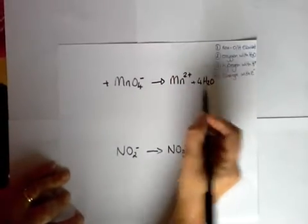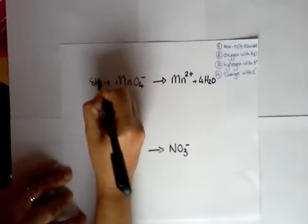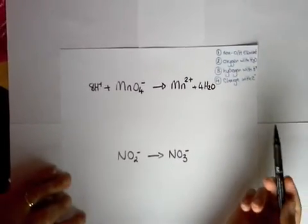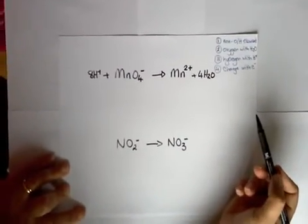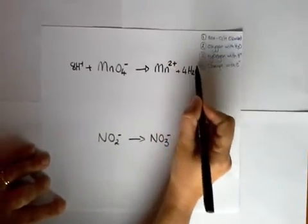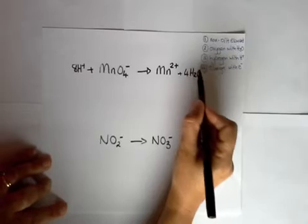So eight H pluses will make that balance. Finally we now come to the charge. So it's exactly the same as before. We look at the overall charge this side which at the moment is plus two.